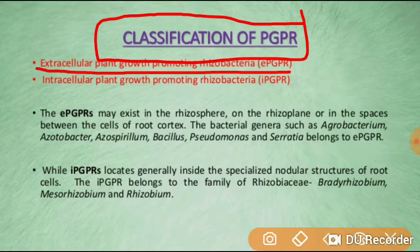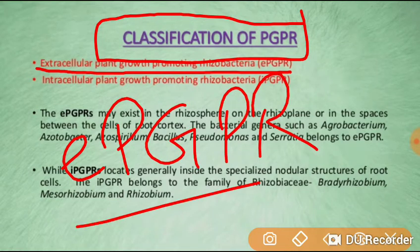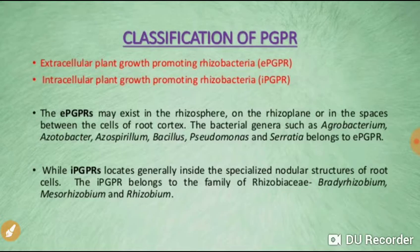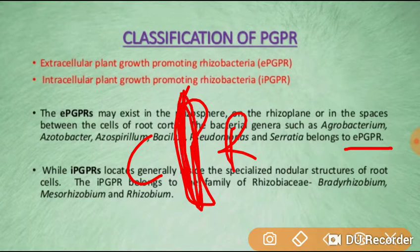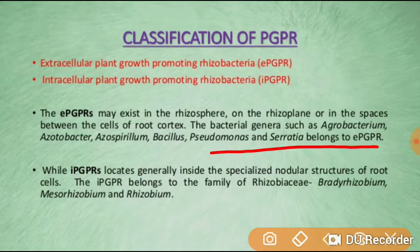Extracellular plant growth promoting rhizobacteria may exist in the rhizosphere, on the rhizoplane, or in the space between cells or the root cortex. Bacteria such as Agrobacterium, Azotobacter, Azospirillum, Bacillus, and Pseudomonas species belong to extracellular plant growth promoting rhizobacteria — those present in the intercellular spaces and root cortex.